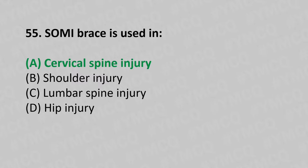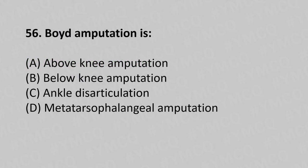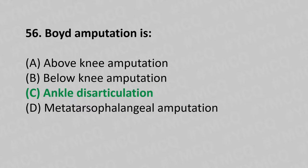Moving to our 56th question. Boyd's amputation is: Option A, Above knee amputation; Option B, Below knee amputation; Option C, Ankle disarticulation; Option D, Metatarsophalangeal amputation. And the answer is Option C, Ankle disarticulation.